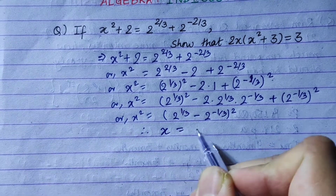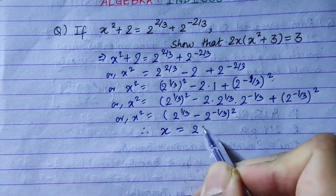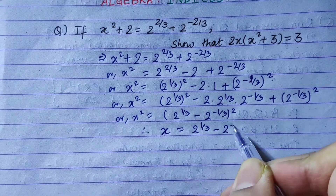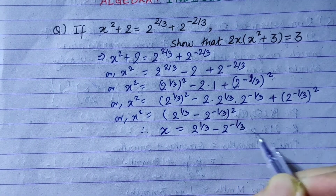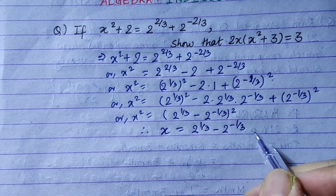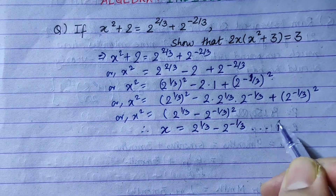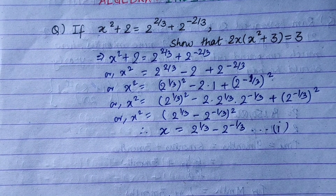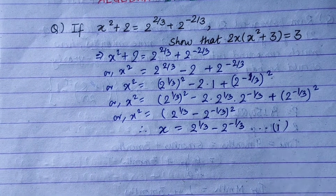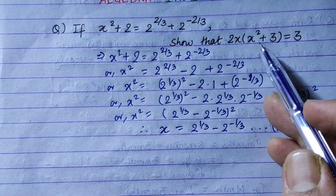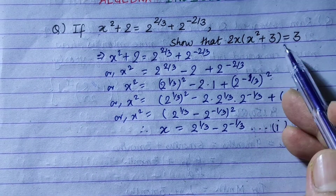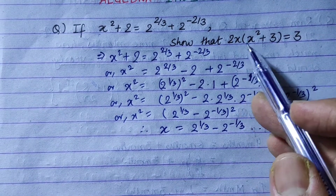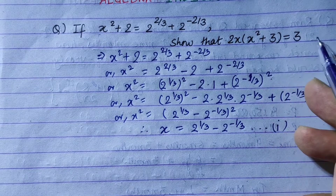We find that the value of x is 2 to the power 1/3 minus 2 to the power minus 1/3. Now, using equation 1, we can see that taking common factors out, we can show 2x cubed plus 6x equals 3.